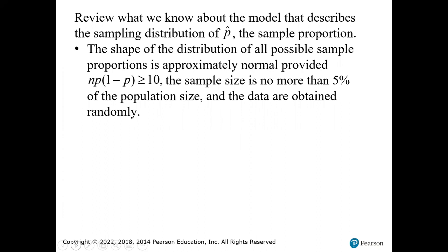What do we know from last chapter? The shape of the distribution of all possible sample proportions is approximately normal, provided that NP times 1 minus P is greater than or equal to 10, the sample size is no more than 5% of the population size, and the data is obtained randomly. For this course, all of these conditions will be met — I'm not going to give you a problem you won't be able to do.